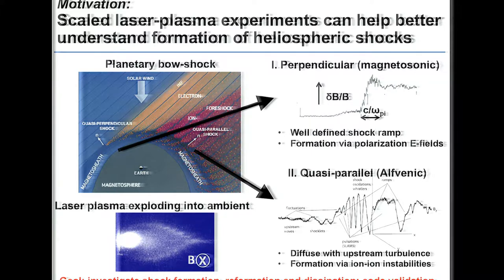The best example is a planetary bow shock such as the Earth's bow shock. In this schematic, you have the solar wind coming in at high super-Alfvénic speed, and when it meets an obstacle — the Earth's magnetosphere — it launches a shock wave. Depending on the angle between the shock normal and the interplanetary magnetic field, you can have a perpendicular shock, called a magnetosonic shock wave, with a well-defined, relatively thin shock ramp.